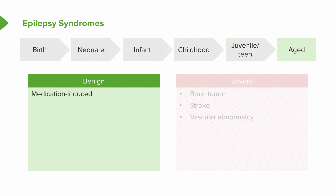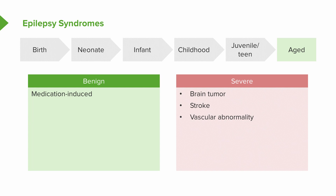And then in adults with benign epilepsies, the first thing we think about is whether this is medication-induced — provoked seizures from a medication rather than true epilepsy. We can also see seizures or epilepsy from brain tumors, stroke, and vascular abnormalities.